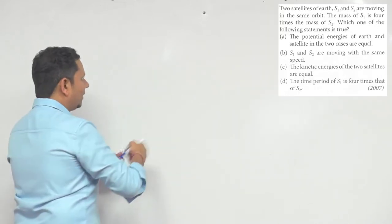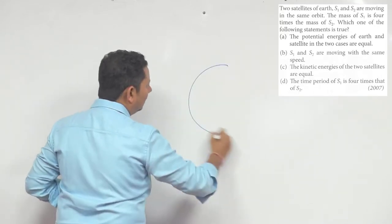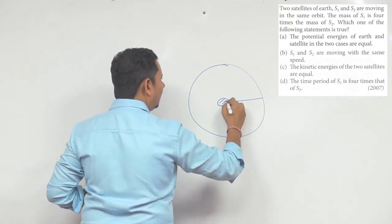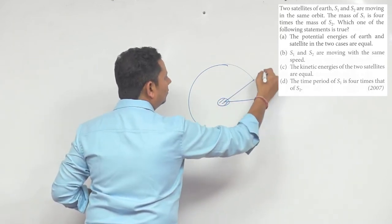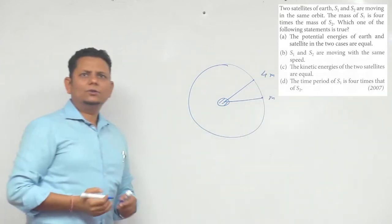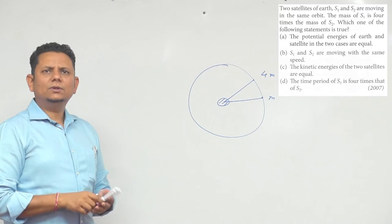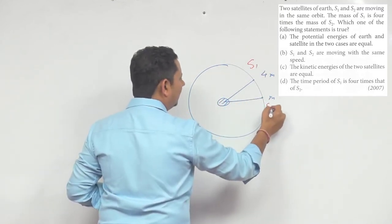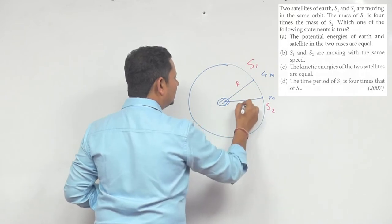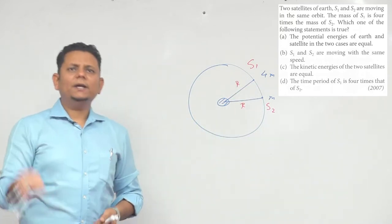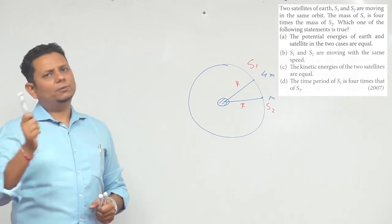So simple, S1, S2. Mass of S1 is four times, right? So this is your S1 satellite, this is your S2 satellite, and the radius is r. We have to comment on potential energy, speed, time period, and kinetic energy. So one of the four things we compare.